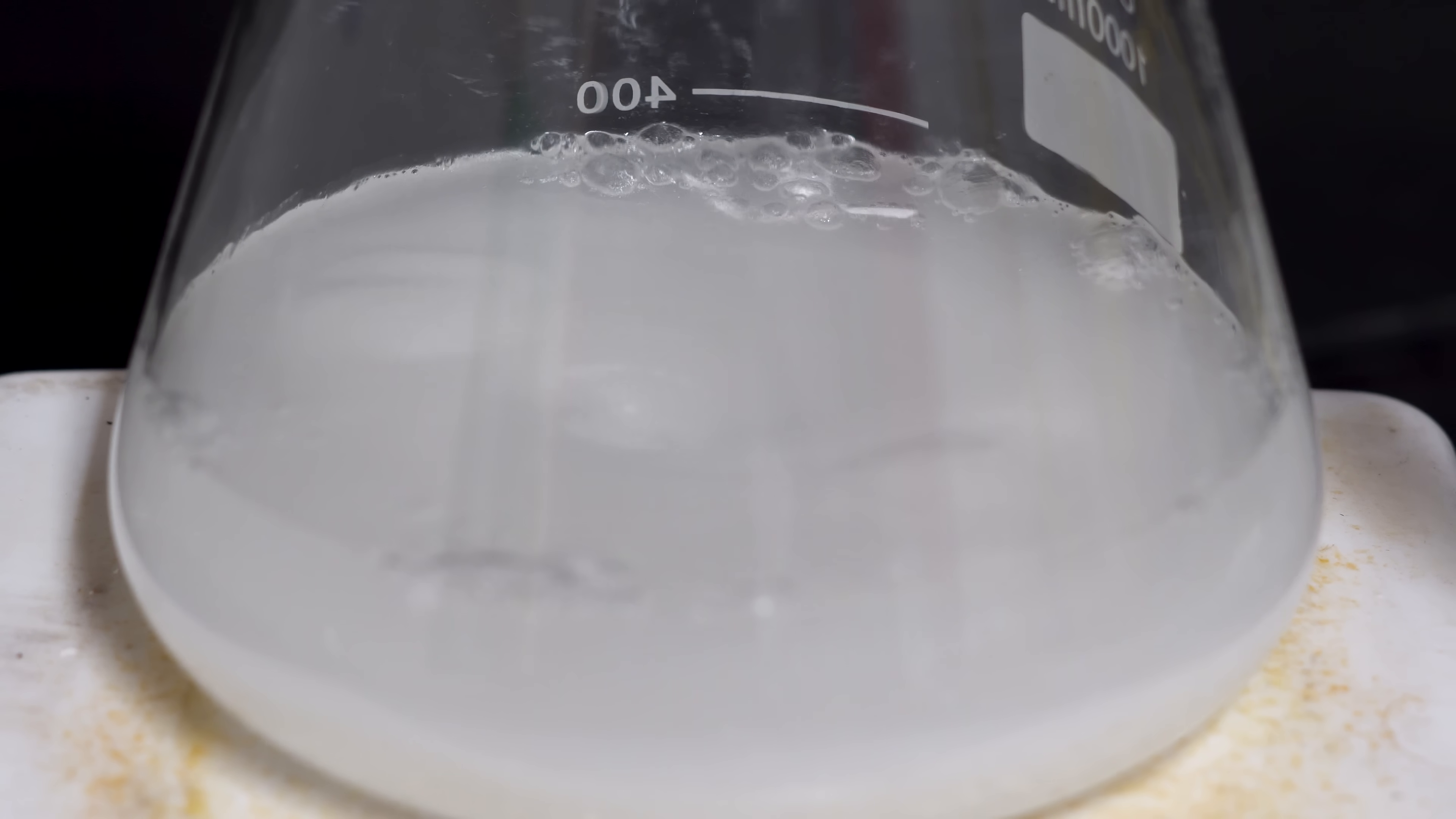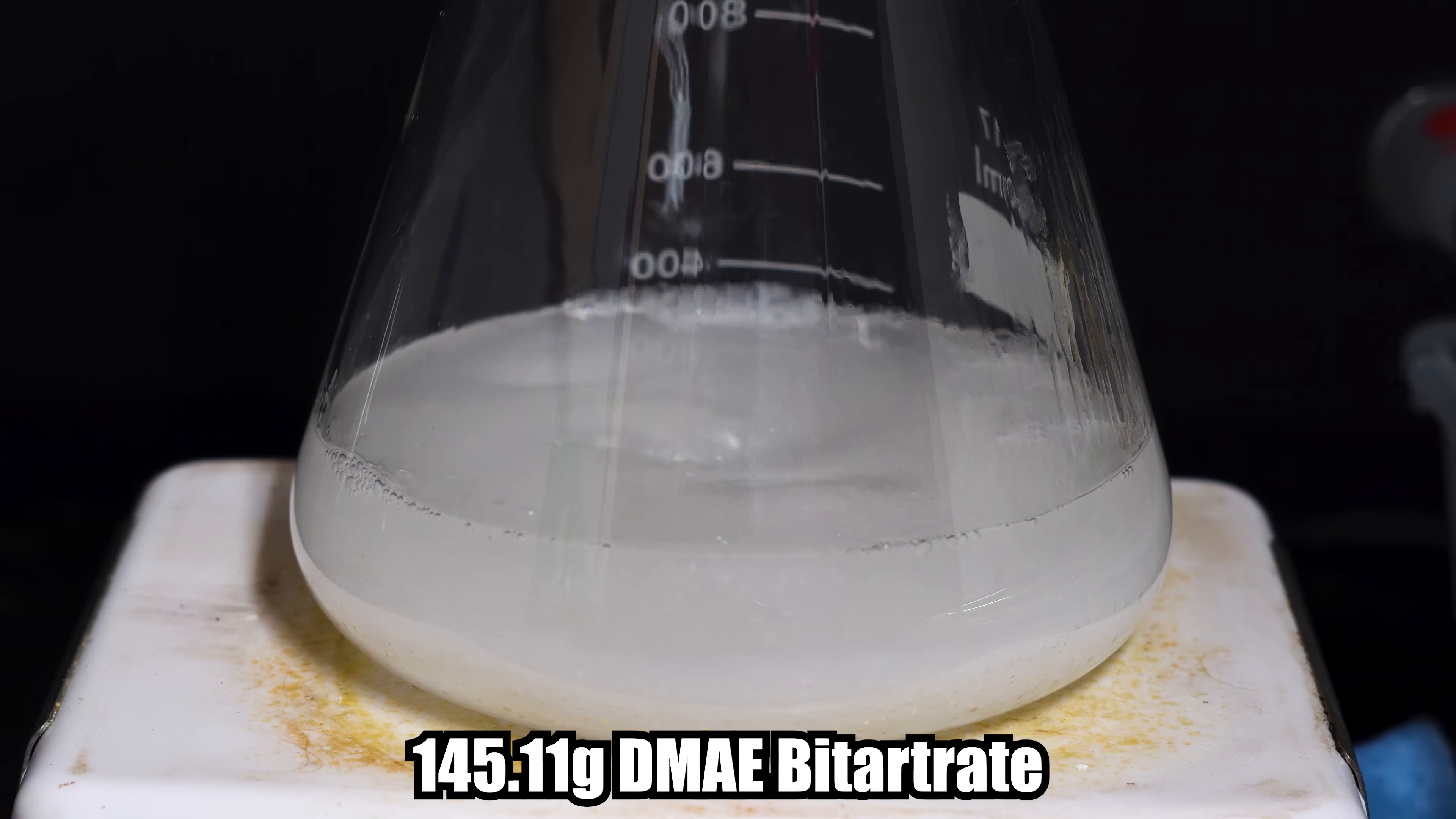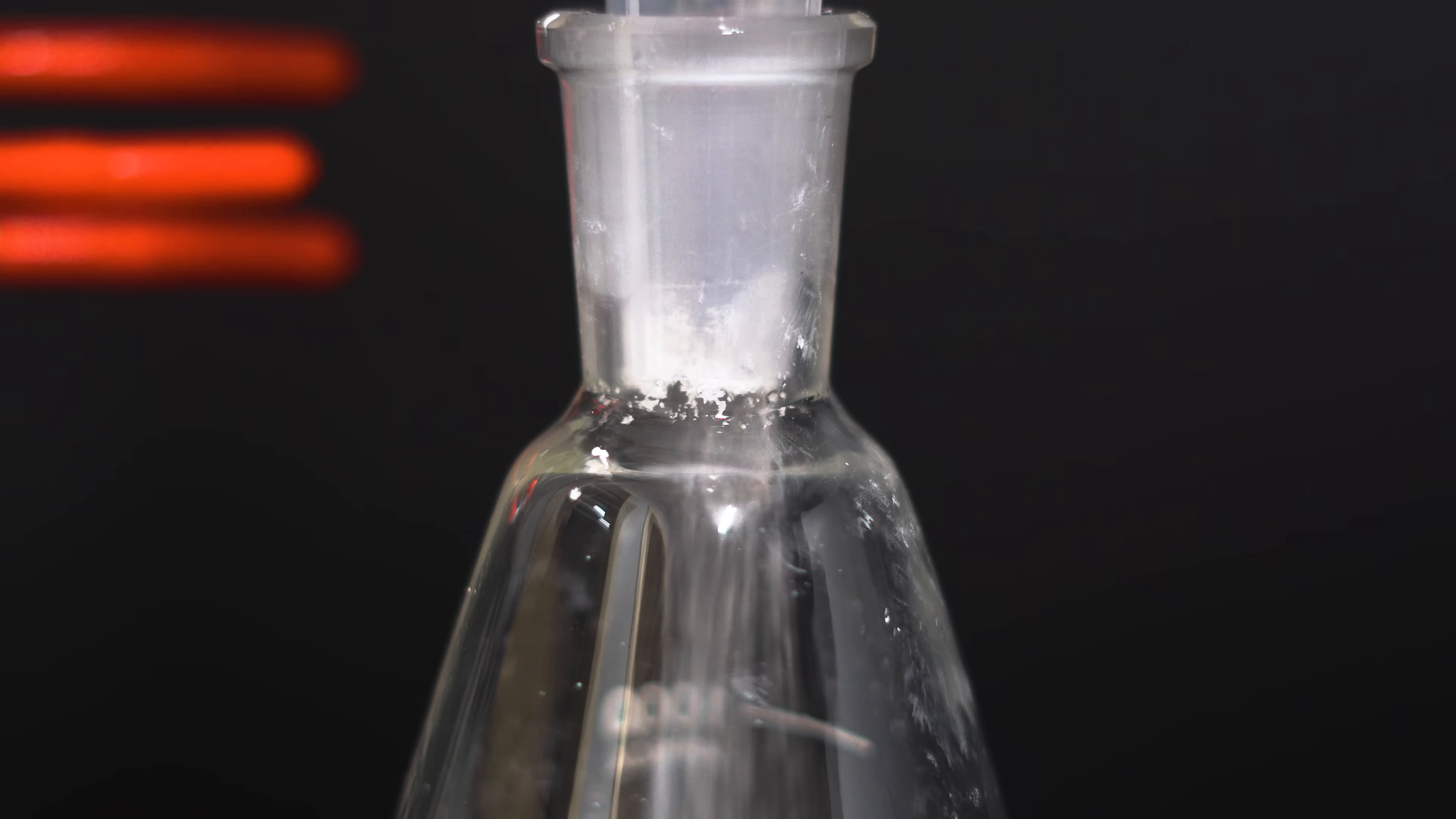Once we had all the sodium almost reacted, I just had a couple slivers left. I was a little impatient and I decided to add the DMA-E bitartrate. I took the condenser off and I got ready to add the supplement in there. 145.11 grams of DMA-E bitartrate was added into the flask. It kind of felt like I was loading a black powder rifle when I used the stir rod to push the powder in the funnel.